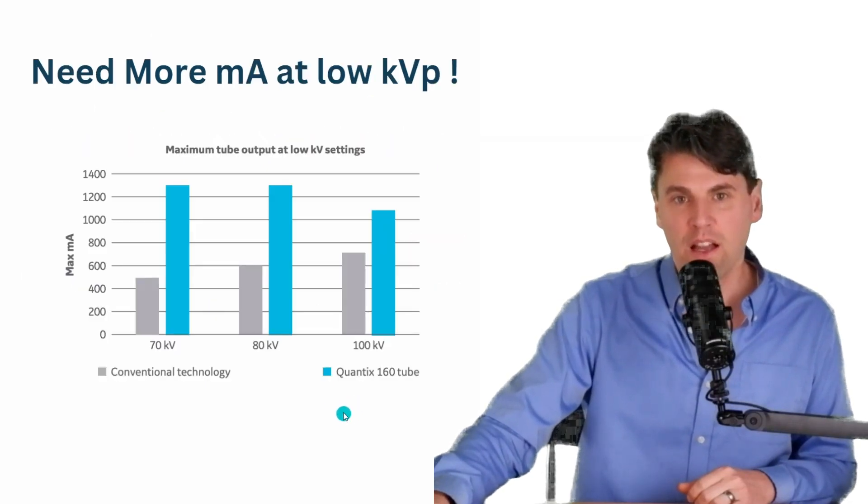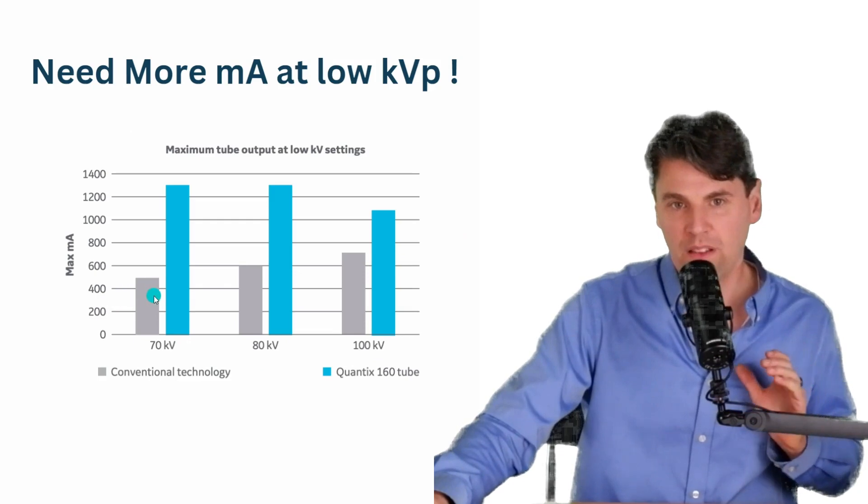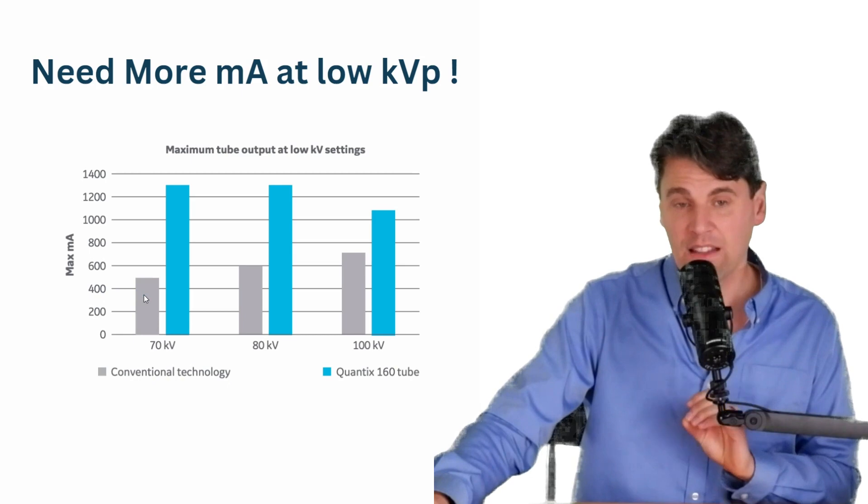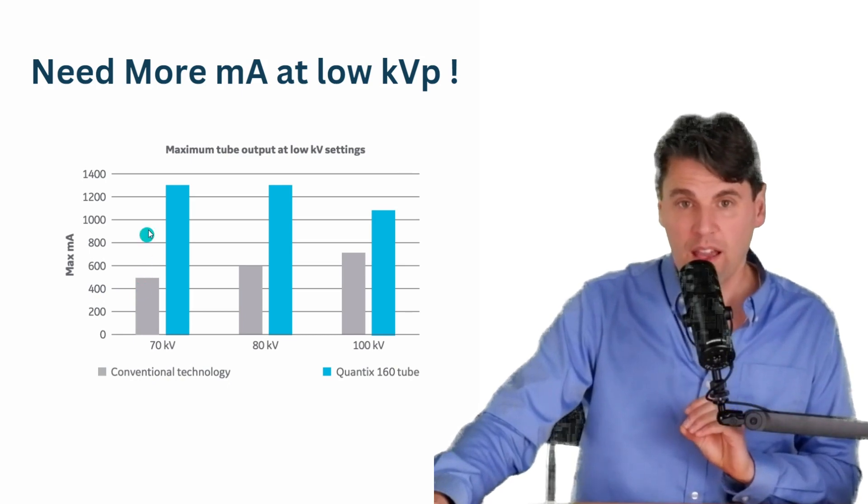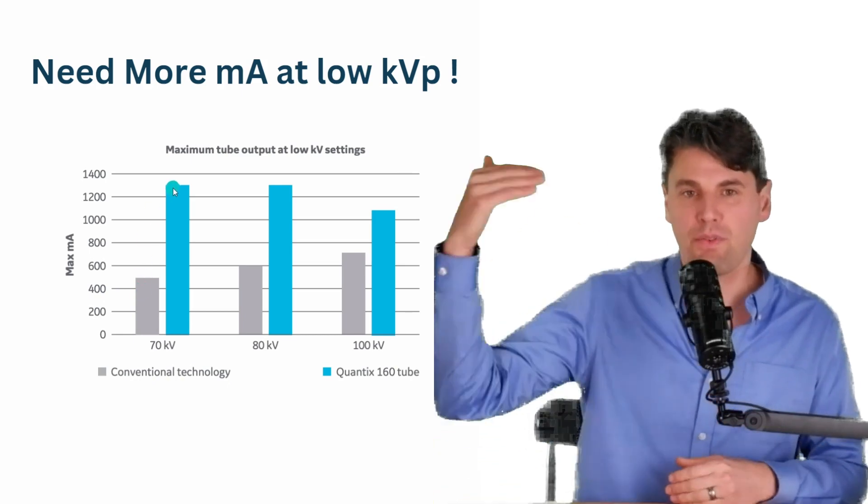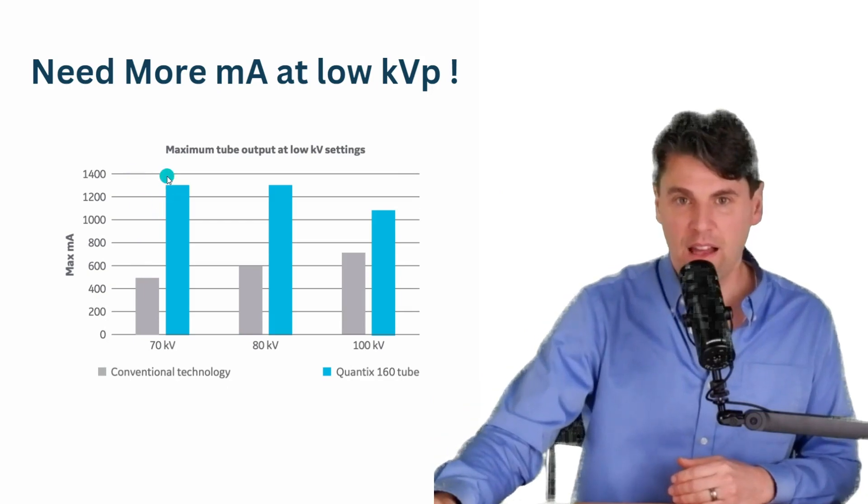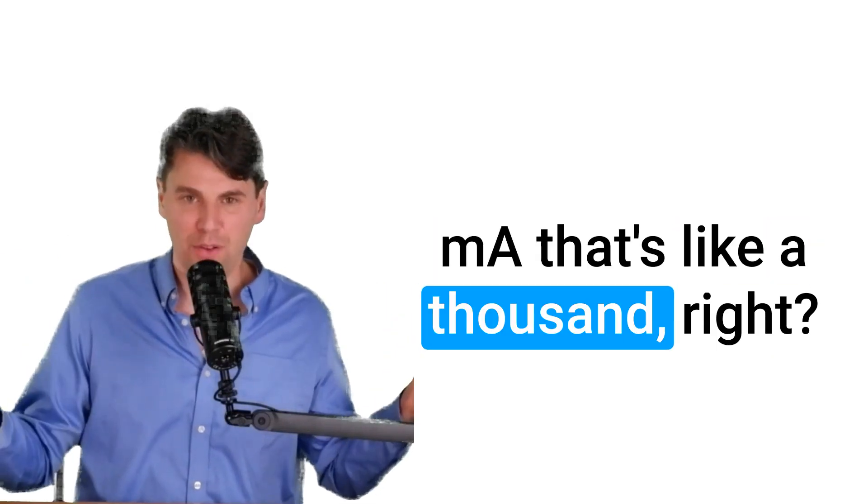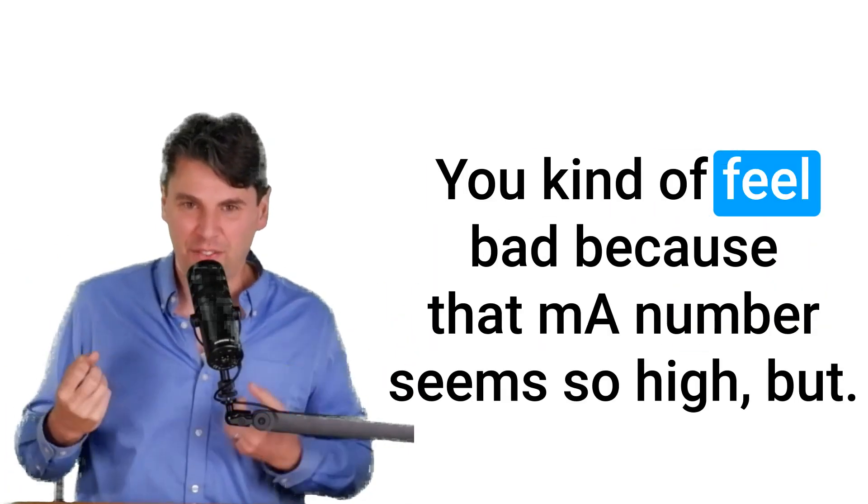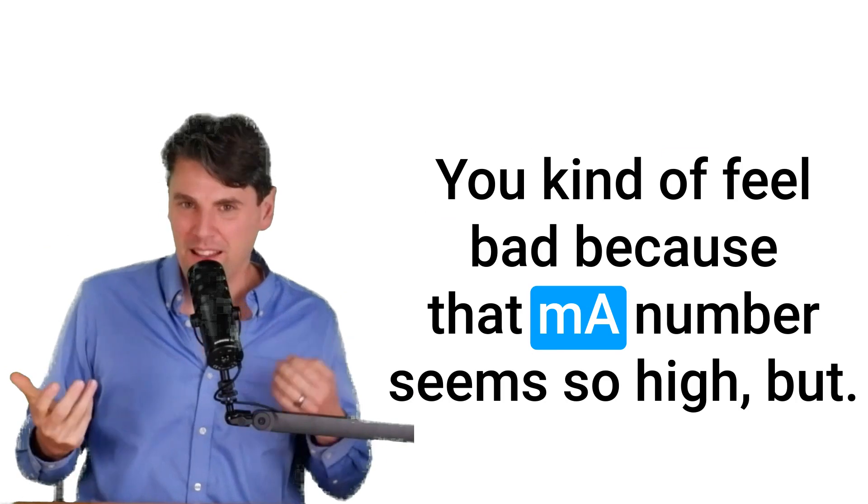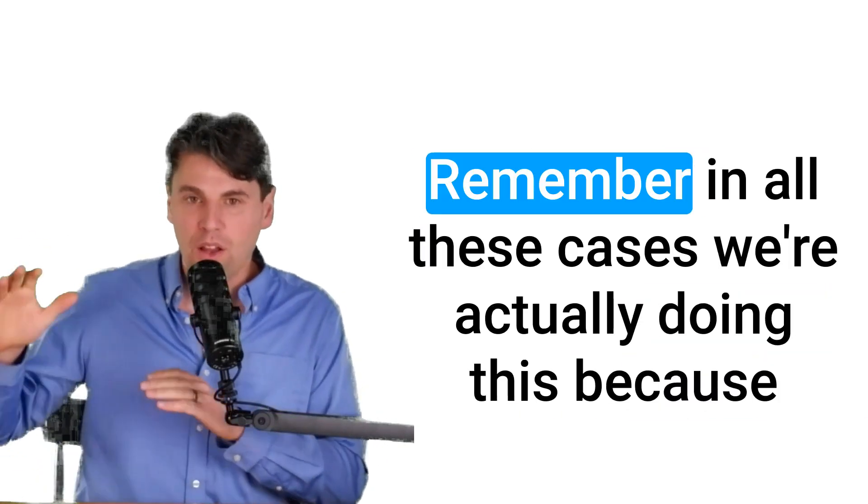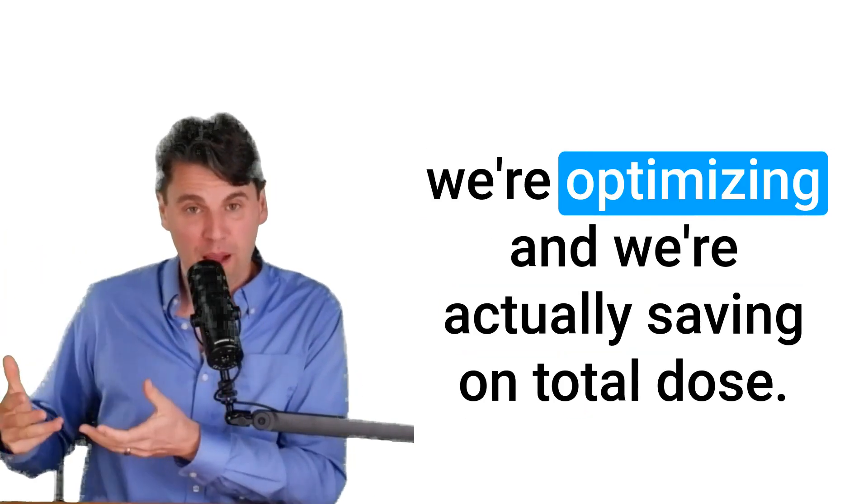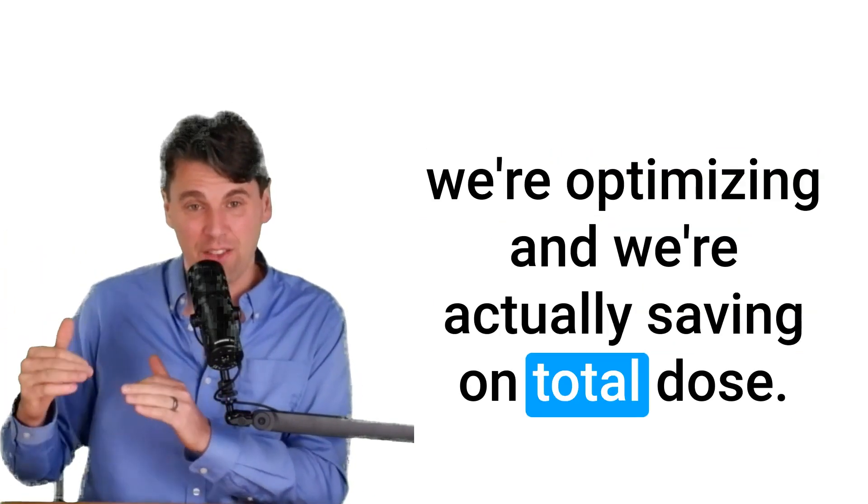So that really allows the vendors to go from relatively lower MAs that were achievable at these low KVPs and go up by several factors to really high MA levels. You don't have to be worried when you see an MA that's like a thousand, right? You kind of feel bad because that MA number seems so high. But remember, in all these cases, we're actually doing this because we're optimizing and we're actually saving on total dose.